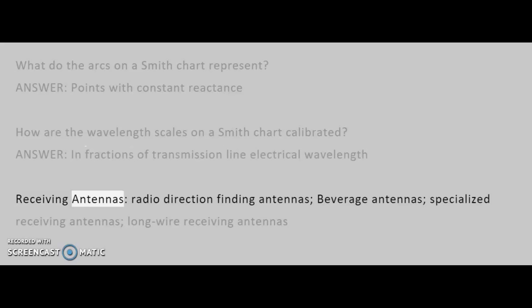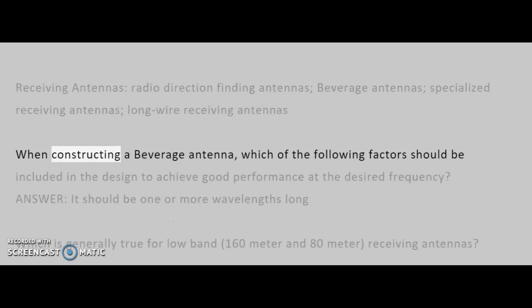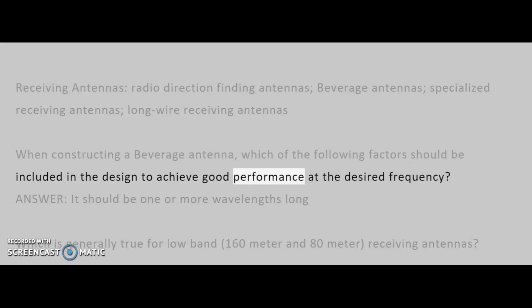Receiving antennas, radio direction finding antennas, beverage antennas, specialized receiving antennas, long wire receiving antennas. When constructing a beverage antenna, which of the following factors should be included in the design to achieve good performance at the desired frequency?